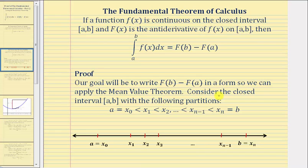So consider the closed interval from a to b with the following partitions. We partition the closed interval from a to b by letting a equal x sub zero and b equal x sub n. Then we use x sub one through x sub n minus one to form the partitions,